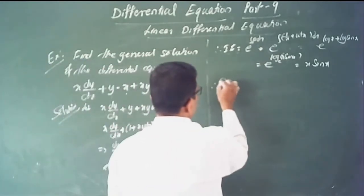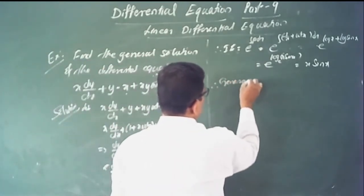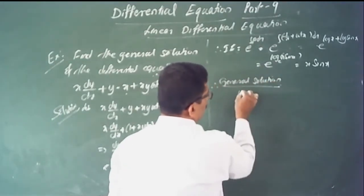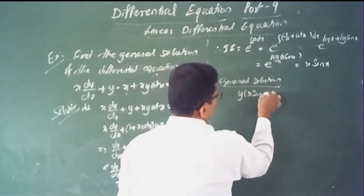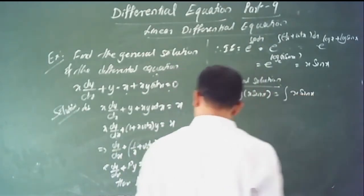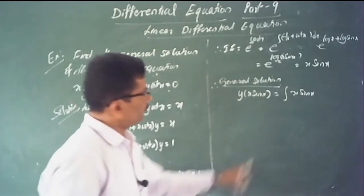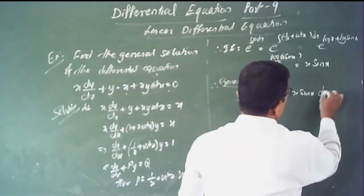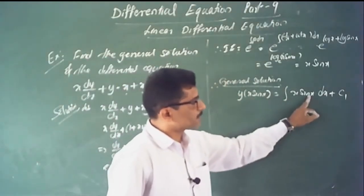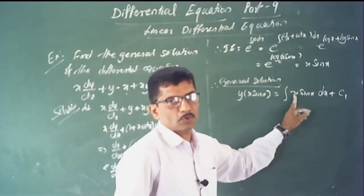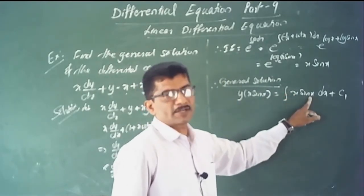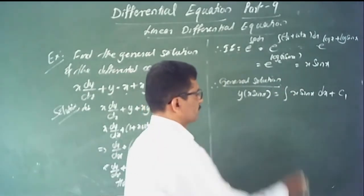Write the general solution: y times x times sin x equals the integral of x times sin x times 1 dx plus constant, since q equals 1. On the right-hand side, x times sin x is a product of two functions. The algebraic function x is the first function and the trigonometric function sin x is the second.